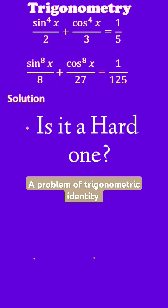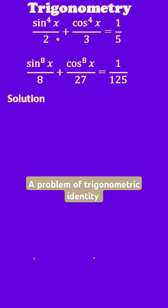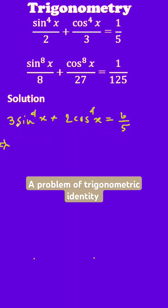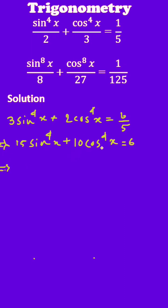First of all, multiply the equation by 6. Now again multiply the expression by 5. By using the formula cos²θ + sin²θ = 1, you convert it into sin x.